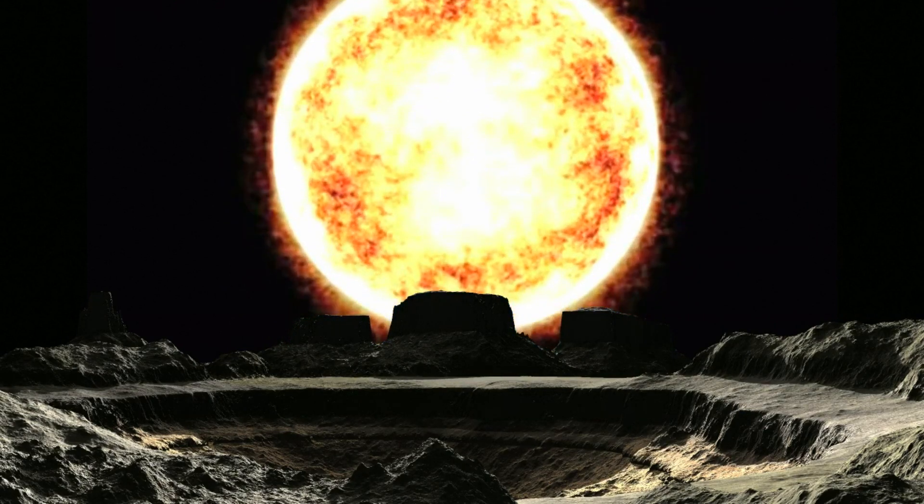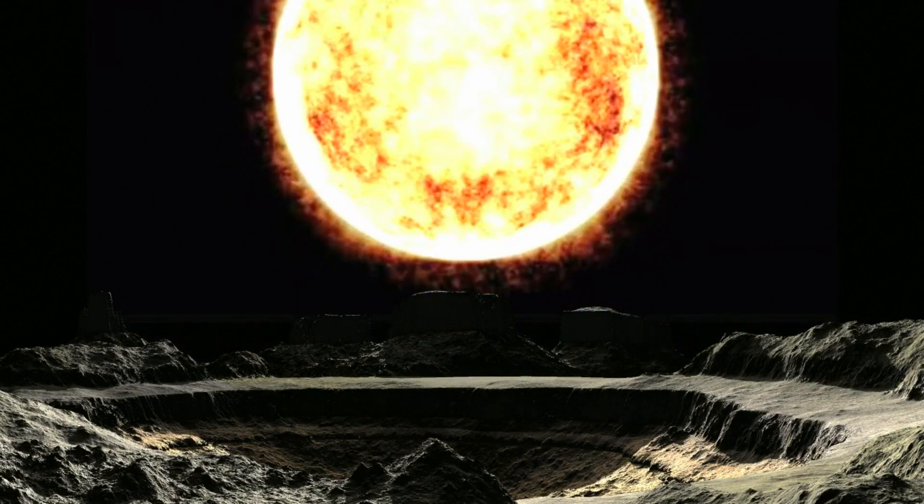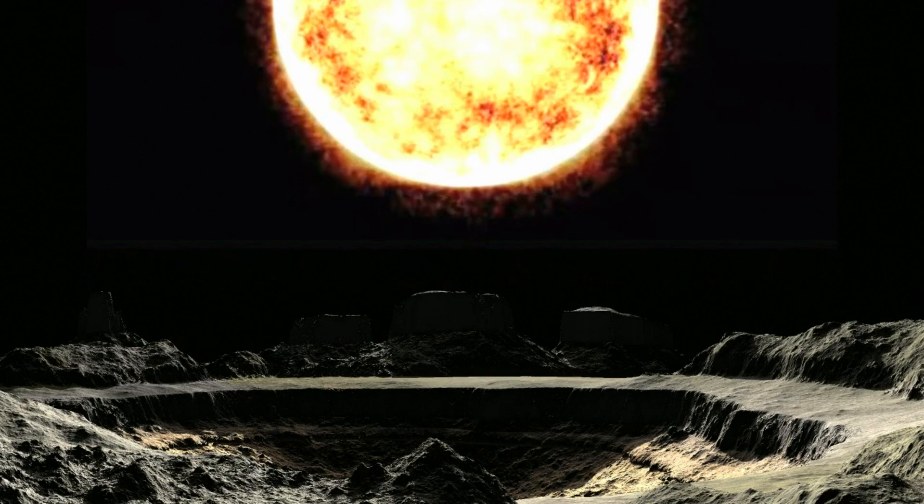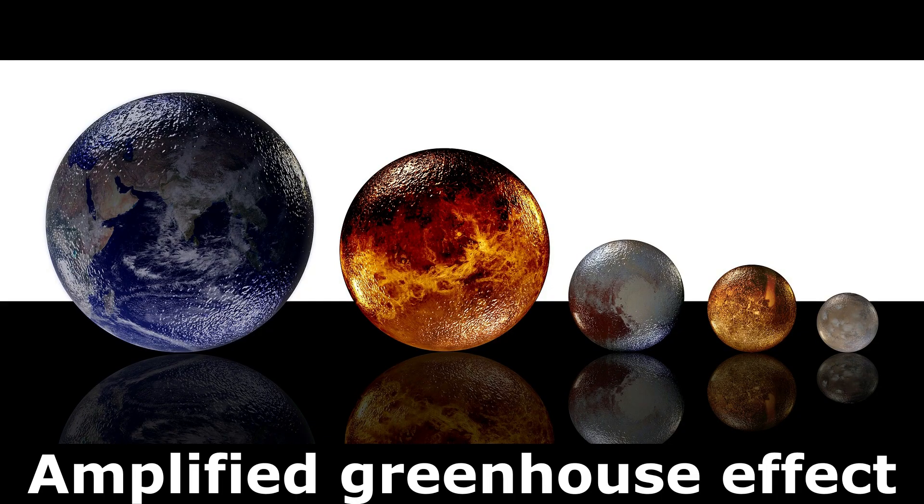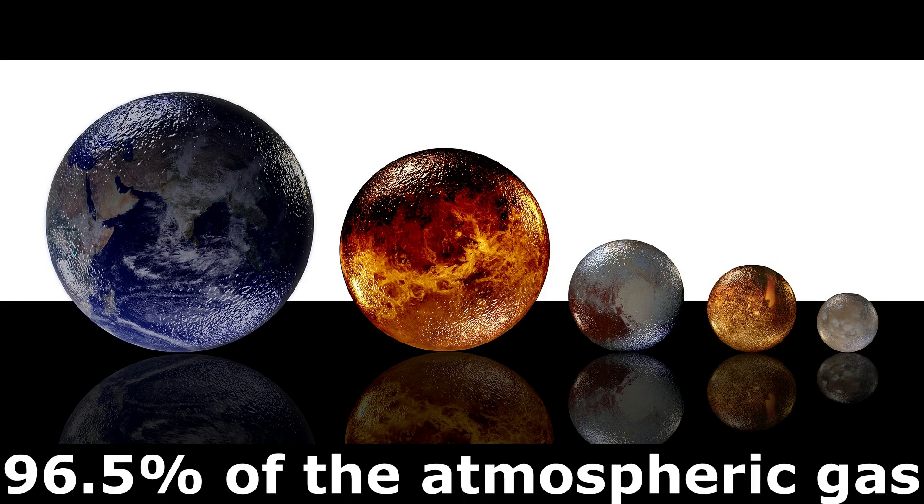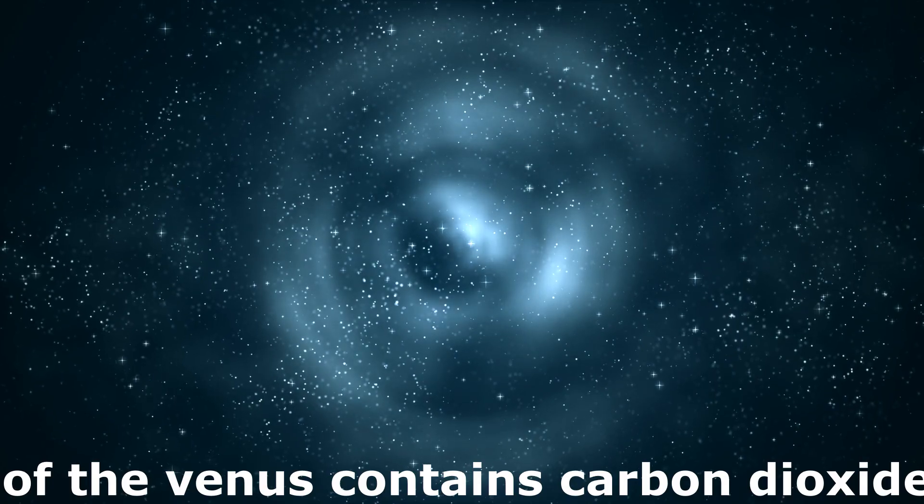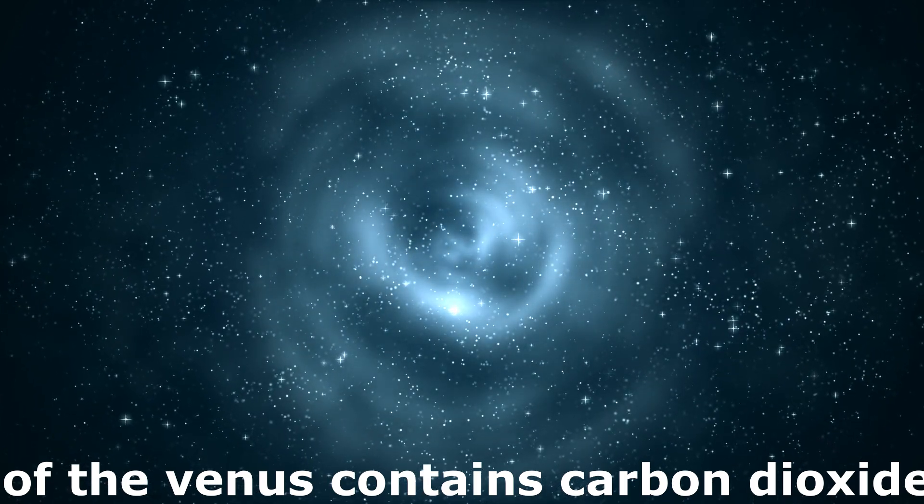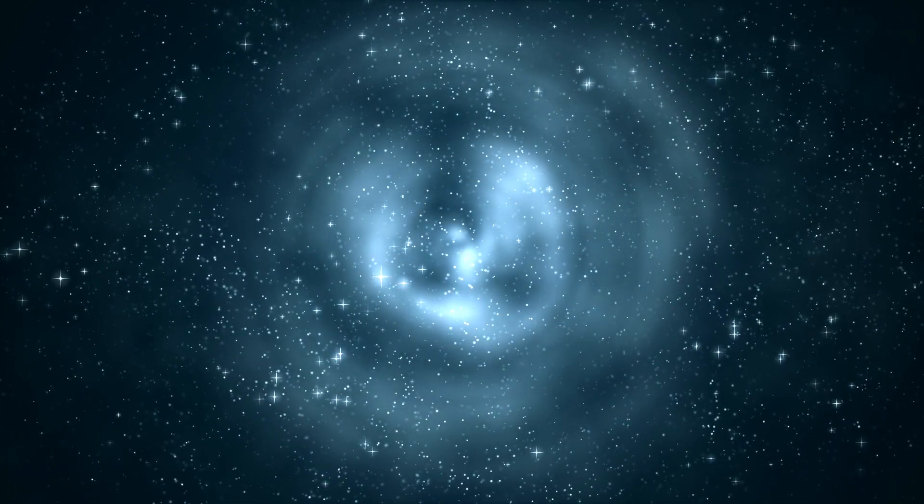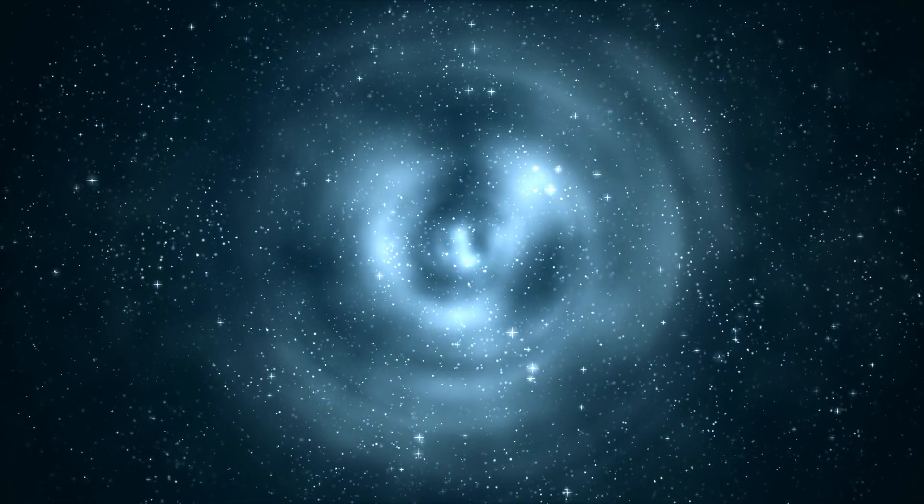The reason behind this very high temperature of Venus is its amplified greenhouse effect. 96.5% of the atmospheric gas of Venus contains carbon dioxide that traps the heat and causes increased surface temperature that makes it hotter than even Mercury.